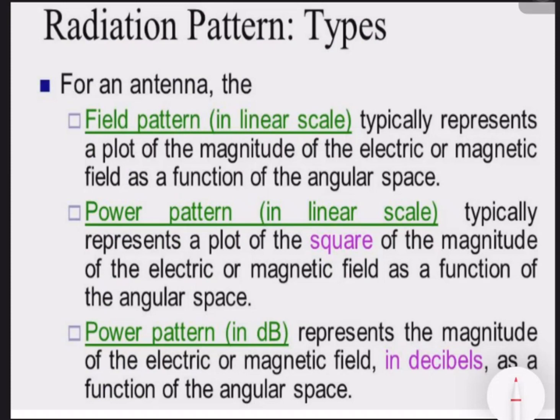There are three different types of radiation patterns for an antenna: field pattern, power pattern in linear scale, and power pattern in dB scale.